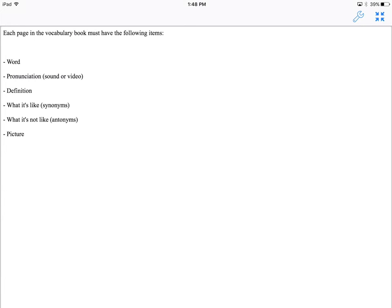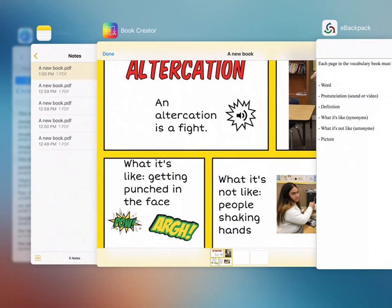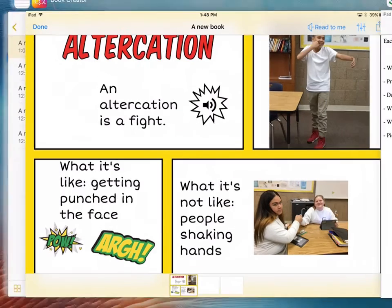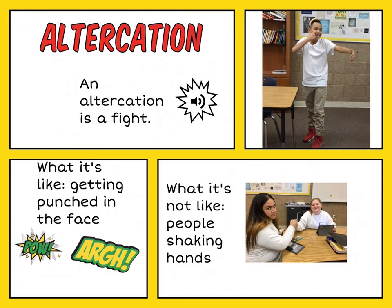Here's an example that I made with the students. Our word was altercation. We have the definition, a picture, and the sound. Altercation. We say that it's like getting punched in the face; what it's not like is people shaking hands. We used the comic book layout.